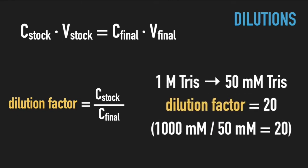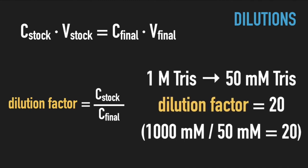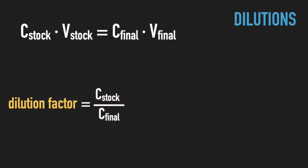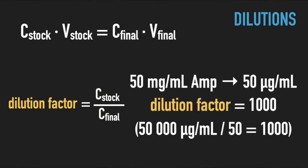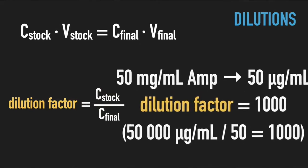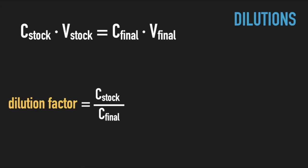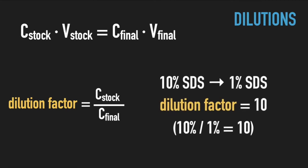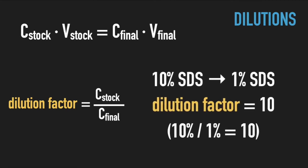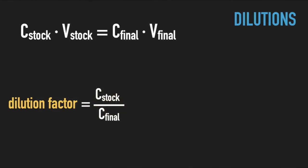For example, to get 50 millimolar Tris, we need to dilute 1 molar stock by a factor of 20. 50 mg per milliliter penicillin stock should be diluted 1000 times to reach the working concentration of 50 micrograms per milliliter. And 10% SDS must be diluted 10 times to get a 1% final concentration.